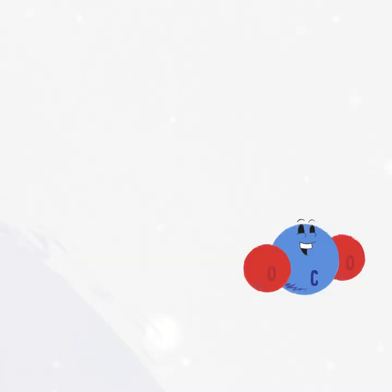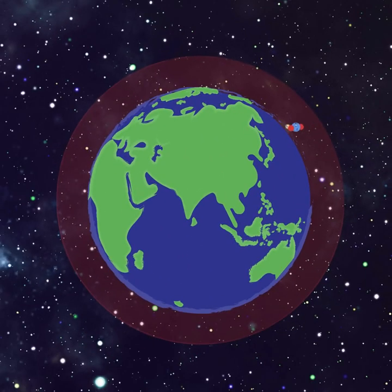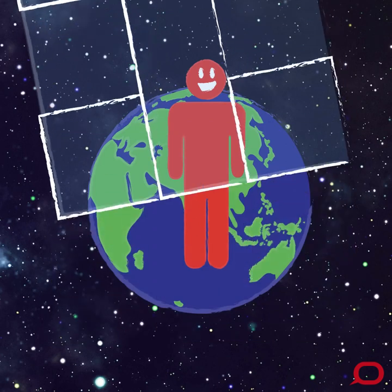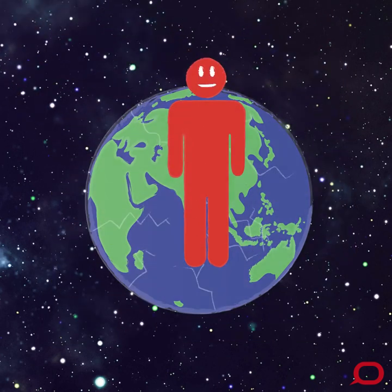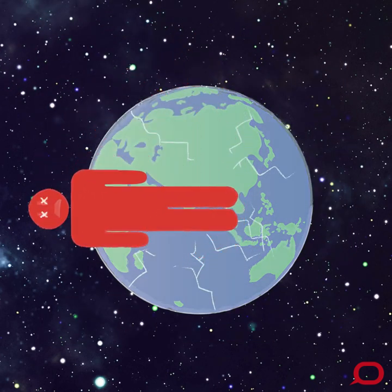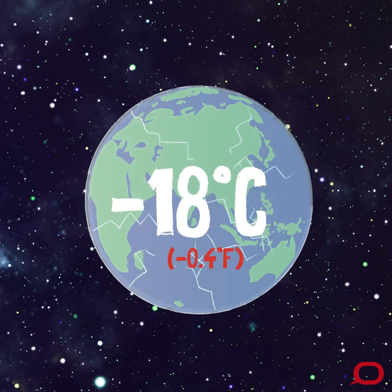Carbon dioxide is one of the main gases in our atmosphere that traps heat, creating the greenhouse effect that provides the conditions that allow human life to exist on Earth. Without the natural greenhouse effect, the average temperature on Earth would be a frigid minus 18 degrees Celsius.